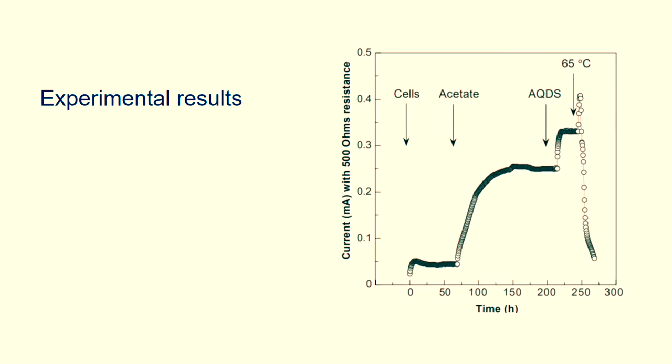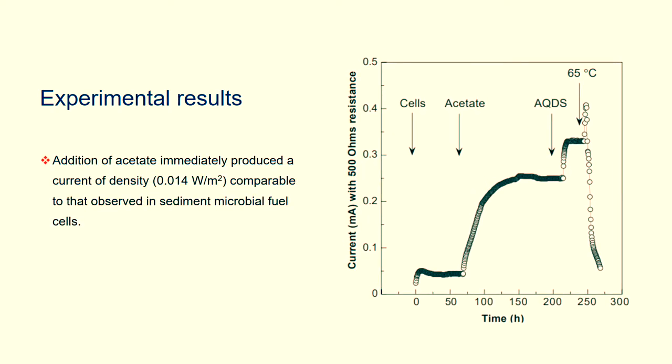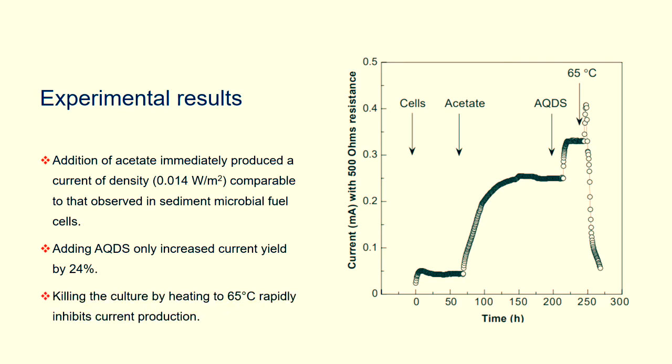Next is the experimental result. Addition of acetate immediately produced a current of density 0.014 Watt per square meter, comparable to that observed in sediment microbial cells. Adding AQDS only increased current yield by 24%. Killing the culture by heating to 65 degrees Celsius rapidly inhibits current production.